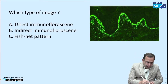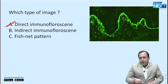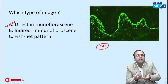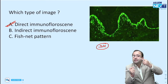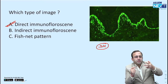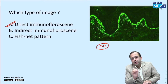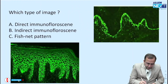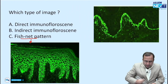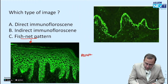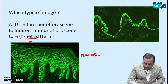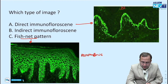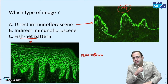What do you see in this image? This is direct immunofluorescence of Dermatitis herpetiformis — IgA-mediated picture seen at the dermal-epidermal junction. IgA deposit is seen in Dermatitis herpetiformis. This was not fishnet. Fishnet pattern is seen in Pemphigus — that is a prospective neat PG question. This was direct immunofluorescence, Dermatitis herpetiformis.